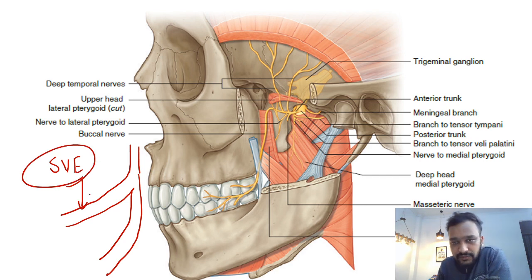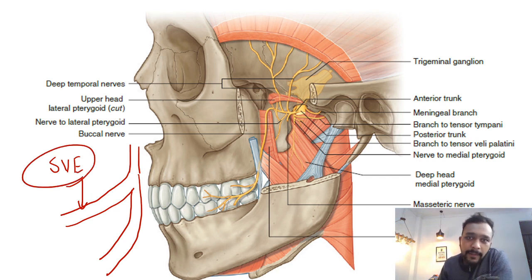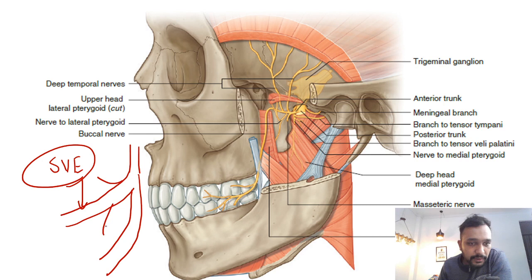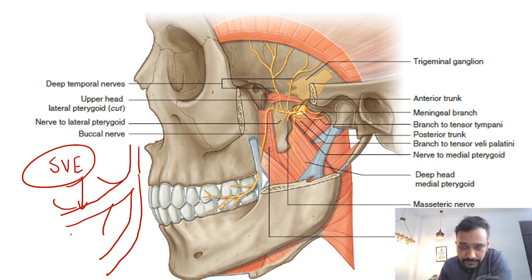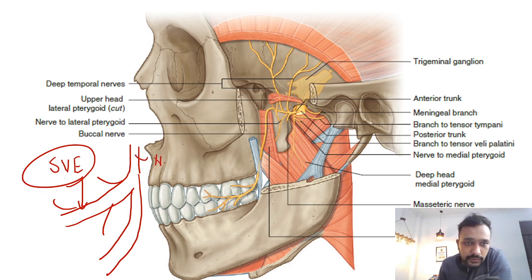The muscles of mastication include the pterygoids, temporalis, and buccinator. From the trunk, we have branches — the nerve to the medial pterygoid.